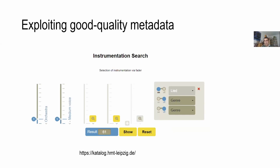There's something implemented in Leipzig — the catalog of the music and theater library — that I think is quite interesting. It features an instrumentation search, which allows you to find sheet music for specific instrumentations combined with musical genres. This is a step towards more user experience and a big step to exploit the metadata that librarians there have created for their titles.